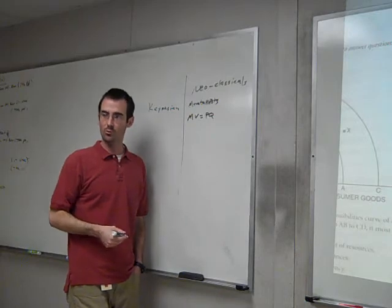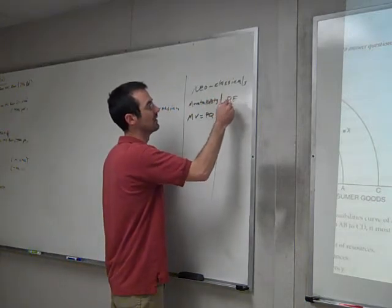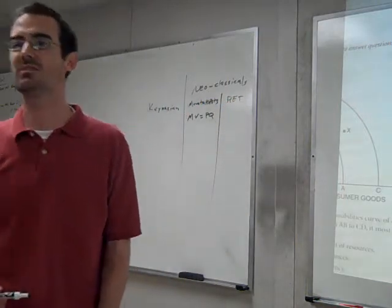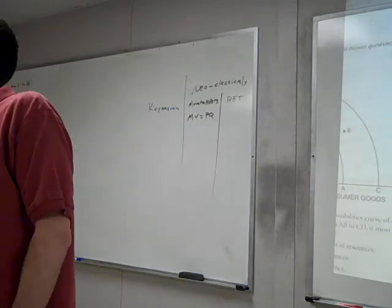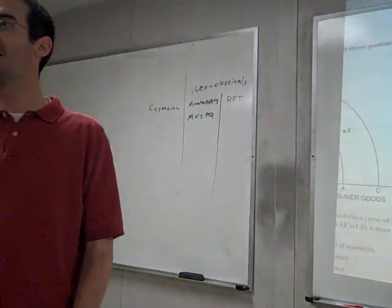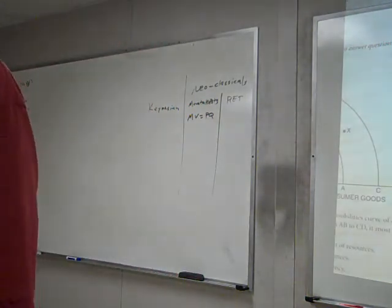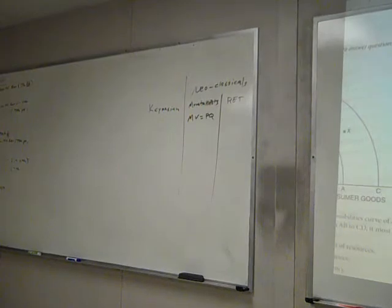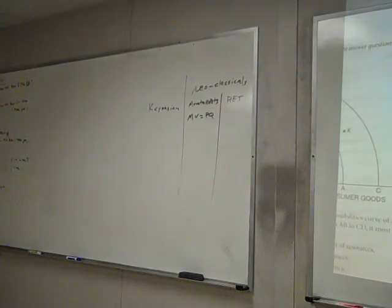But then the neoclassicals believe what the classical economics believes, which is government shouldn't involve itself in the economy. The problems will fix themselves. And then there's monetarists, with their monetary rule and their focus on the monetary equation of exchange. Monetary rule is, how fast can the economy grow? We'll grow the money supply that fast. And then there's rational expectations theory, which boils down to, don't mess with the economy, government. It only creates instability. In fact, if you do engage in fiscal or monetary policy, it won't work.